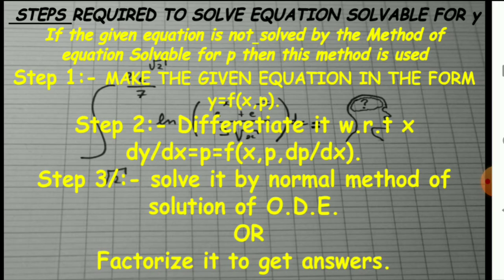Equation solvable for y depends on y = f(x, p), which means y is a function of x and p. If the given equation is not solved by the method of solvable for p, then we have to solve it using the equation solvable for y. We take the given equation in the form y = f(x, p), then differentiate it with respect to x and substitute dy/dx = p.